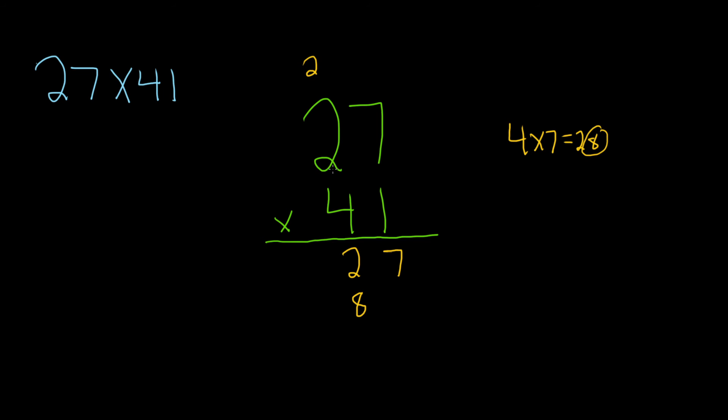Then 4 times 2 is 8. And then you add the 2. So you get 10. You put a line. And now you put a 0 here because it's missing. Then you add 7 plus 0 is 7.